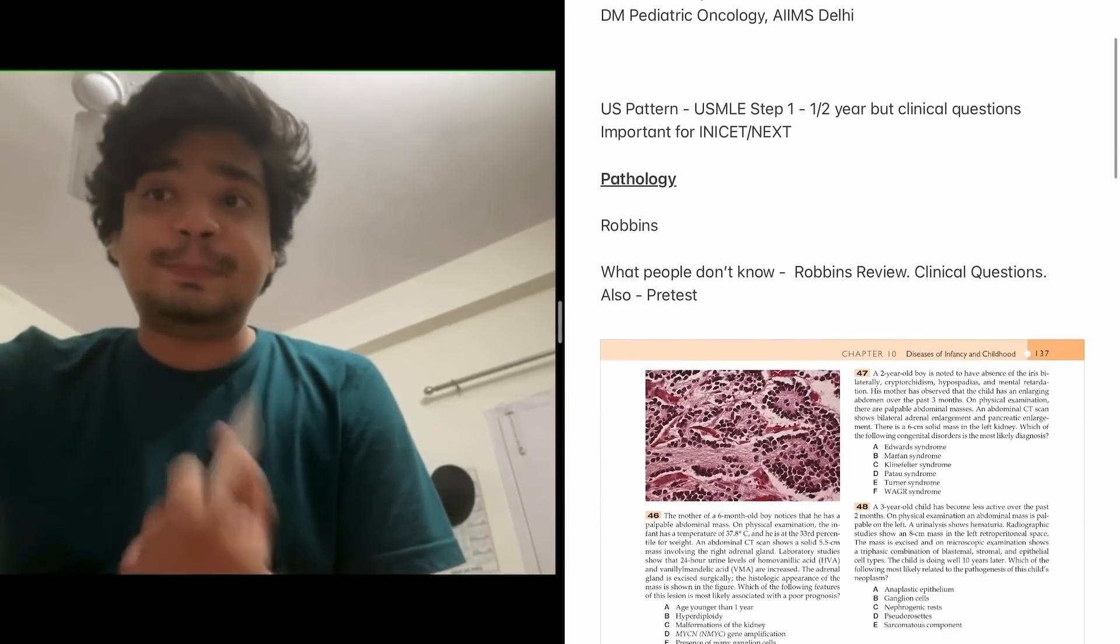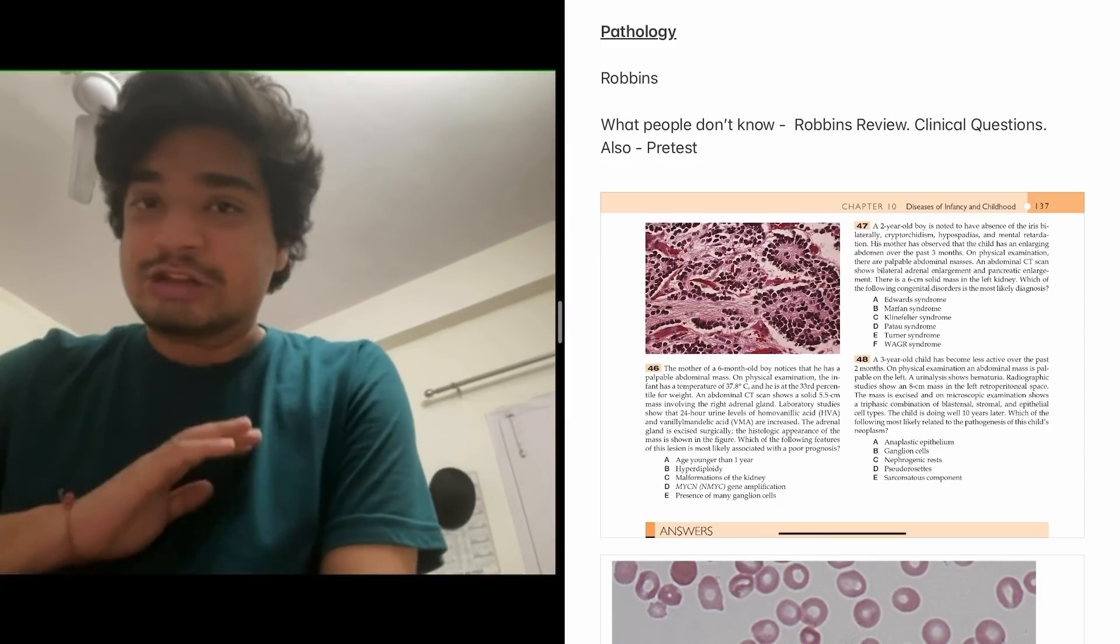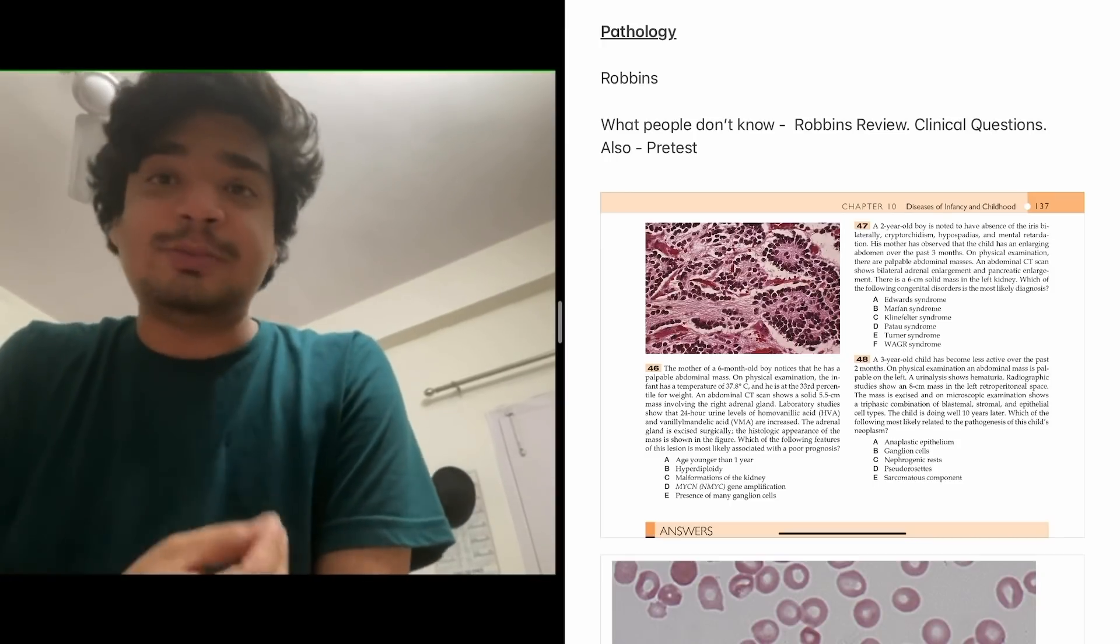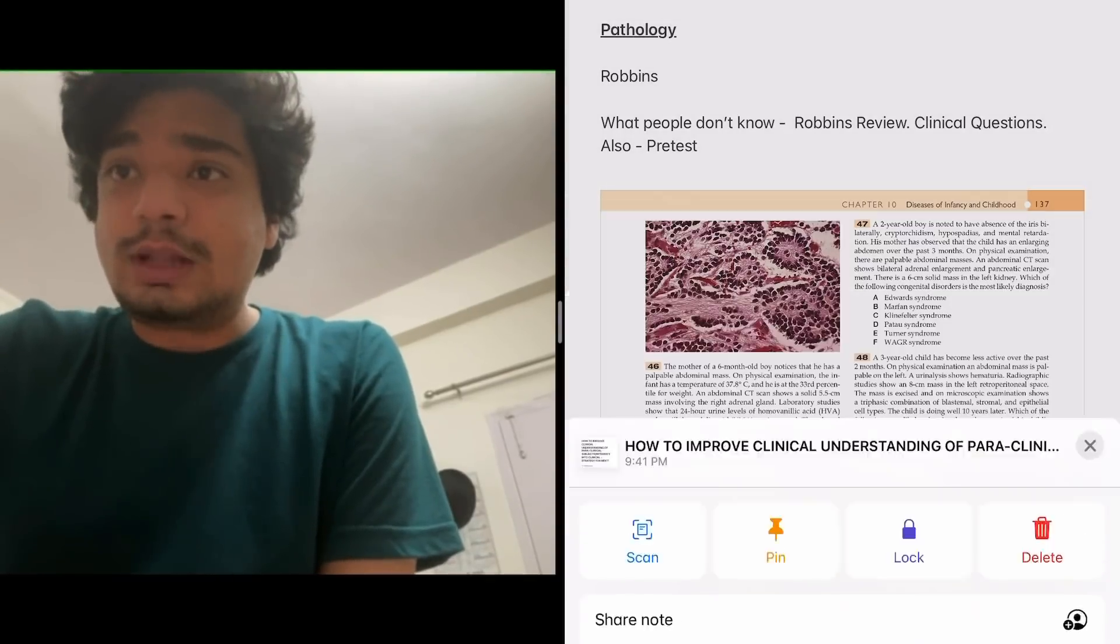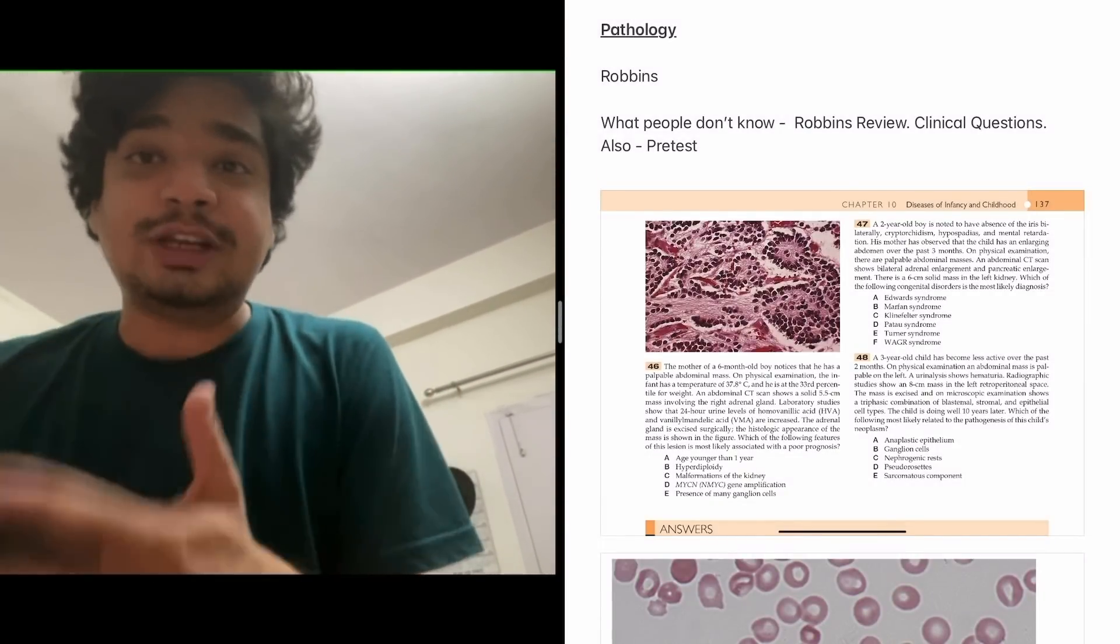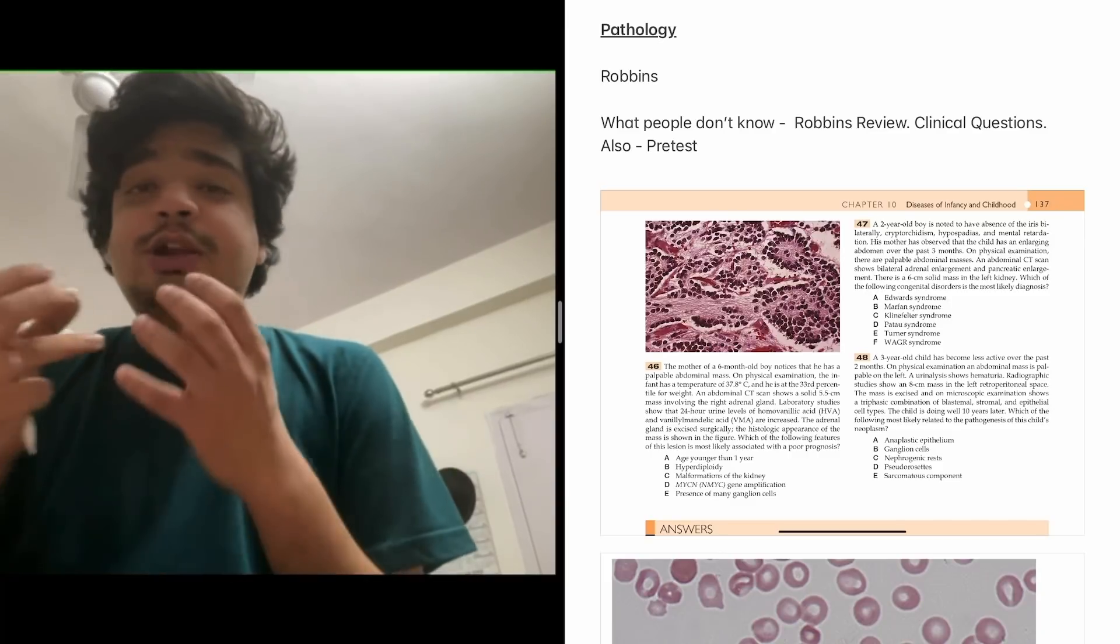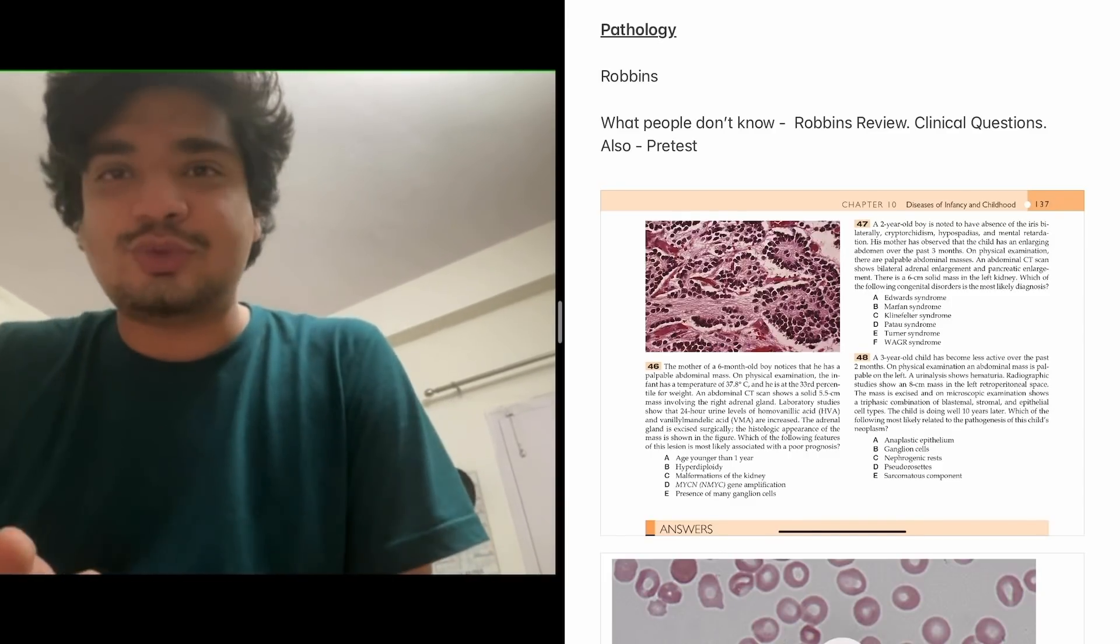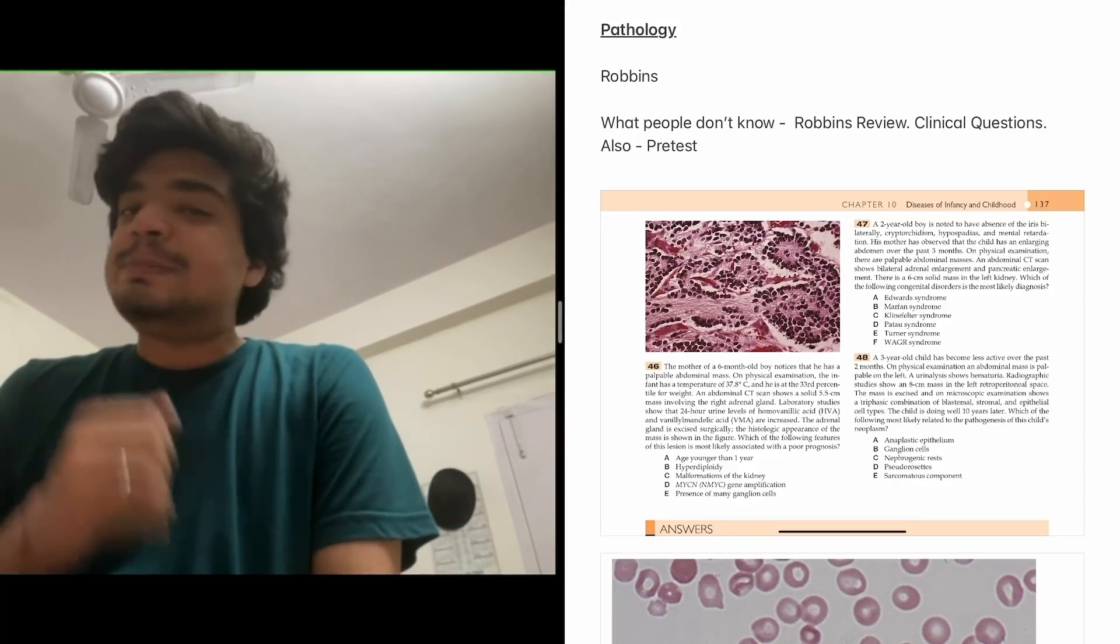First I'll begin with Pathology - Robbins. Most people know that for Pathology you have to study Robbins. There's no doubt about that. Robbins is an excellent book, I love it. You have to remember Robbins just like you remembered your NCERT. Back in 11th and 12th standard, you used to remember NCERT - that's how you have to read Robbins. It's your everything. Please don't go for Harsh Mohan. I request everyone watching this video, please don't go for Harsh Mohan. Robbins is the book you have to read.